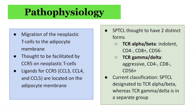Traditionally, subcutaneous panniculitis-like T-cell lymphoma is thought to have two distinct forms: a form based on the alpha-beta types of T-cells and a form based on the gamma-delta type of T-cells. The alpha-beta form is indolent and has markers CD8 positive. The gamma-delta form is aggressive and has markers CD56 positive. Based on the current WHO/EORTC guidelines, the terminology SPTCL specifically refers to the alpha-beta form, whereas the aggressive gamma-delta form has its own separate classification.